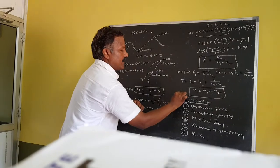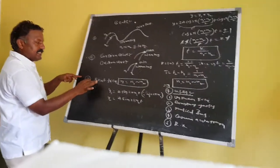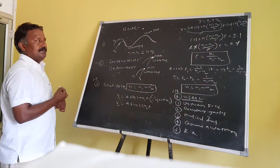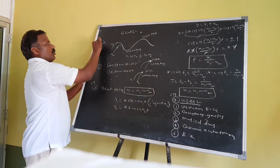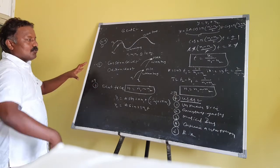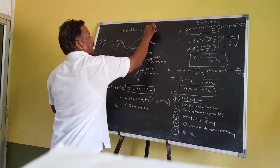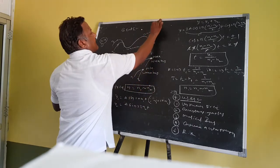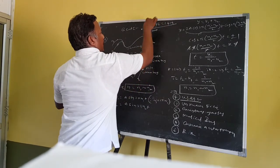Students, this topic carries important exam marks. The uses of beats, beat frequency formula, and definition of beats are each two-mark questions. This is a long question worth eight marks, plus three short questions worth six marks — a total of fourteen marks for this complete topic.